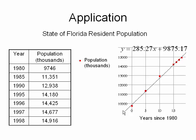On the right-hand side I've graphed those points and found the best-fit line, which is y equals 285.27x plus 9,875.17. Here everything has been rounded to two decimal places.